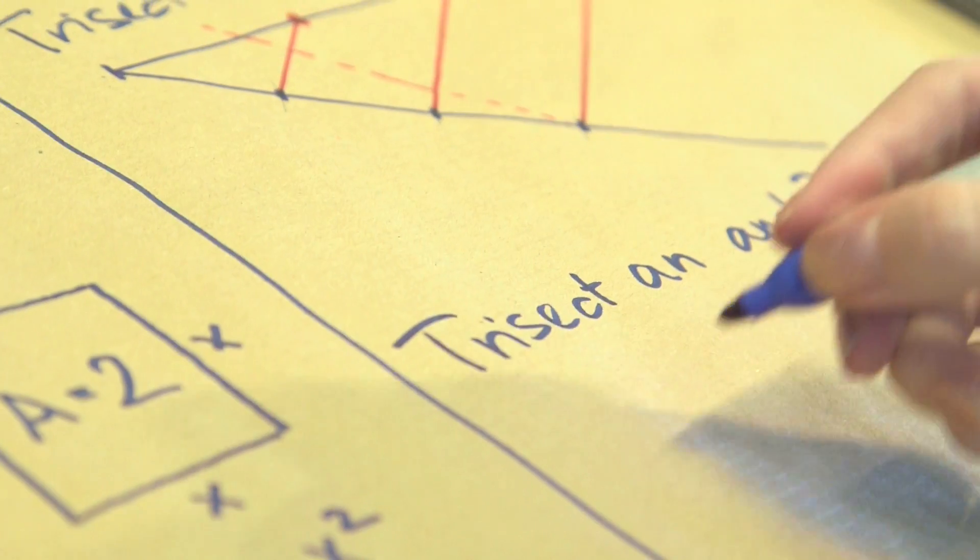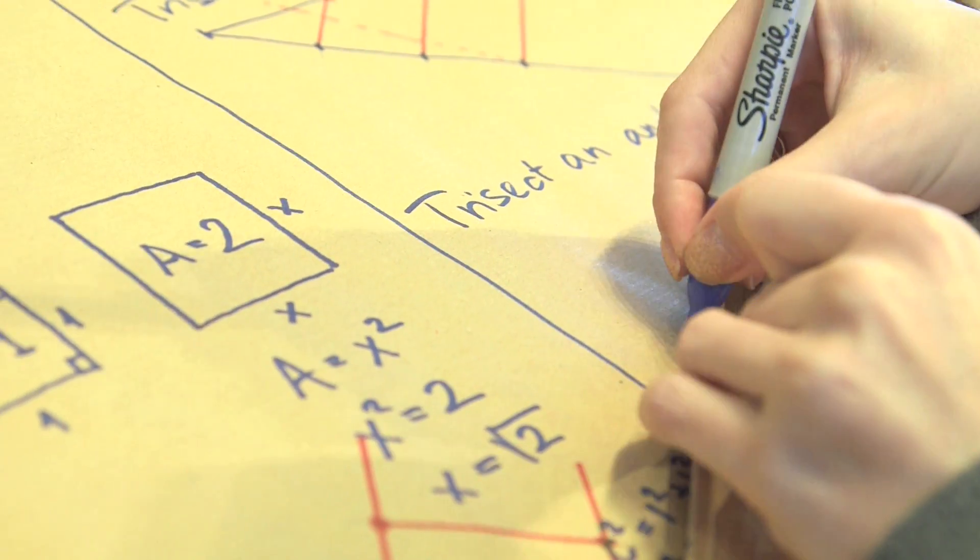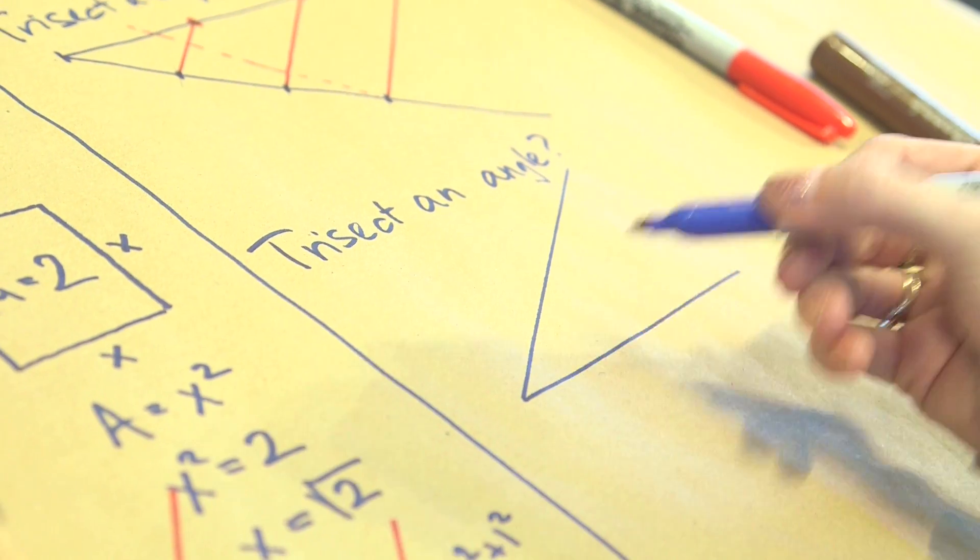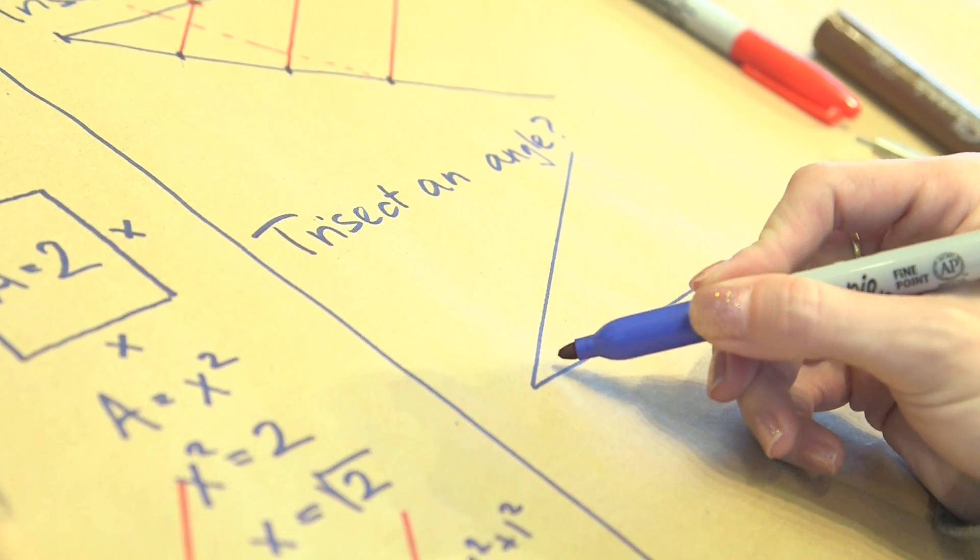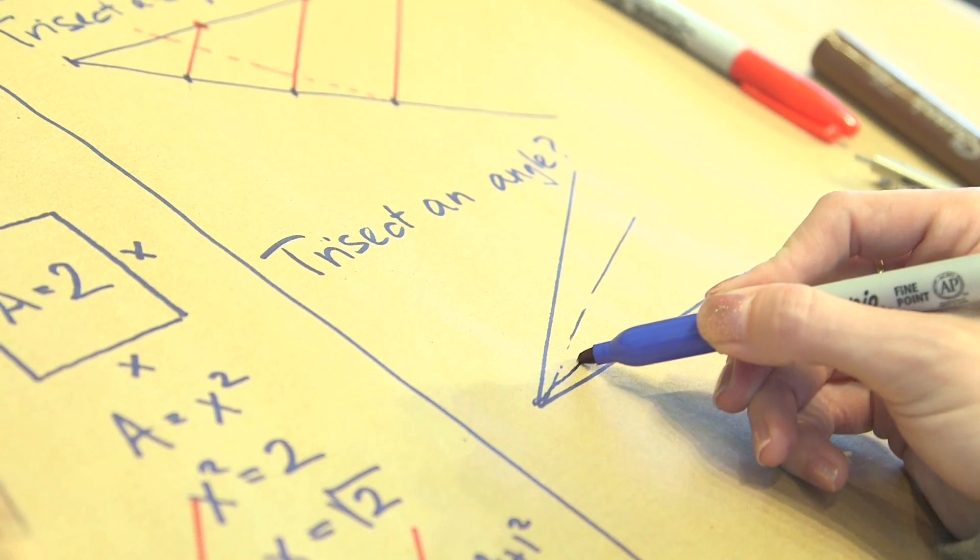So the next thing, next natural question - I showed you how to bisect an angle. Can you trisect an angle? So I give you some angle, you don't know what the measure is because you don't have a measuring device. And can you come up with a construction which will result in two lines which divide that angle in three equal parts? Based on everything you've shown me so far, I would have said yes.